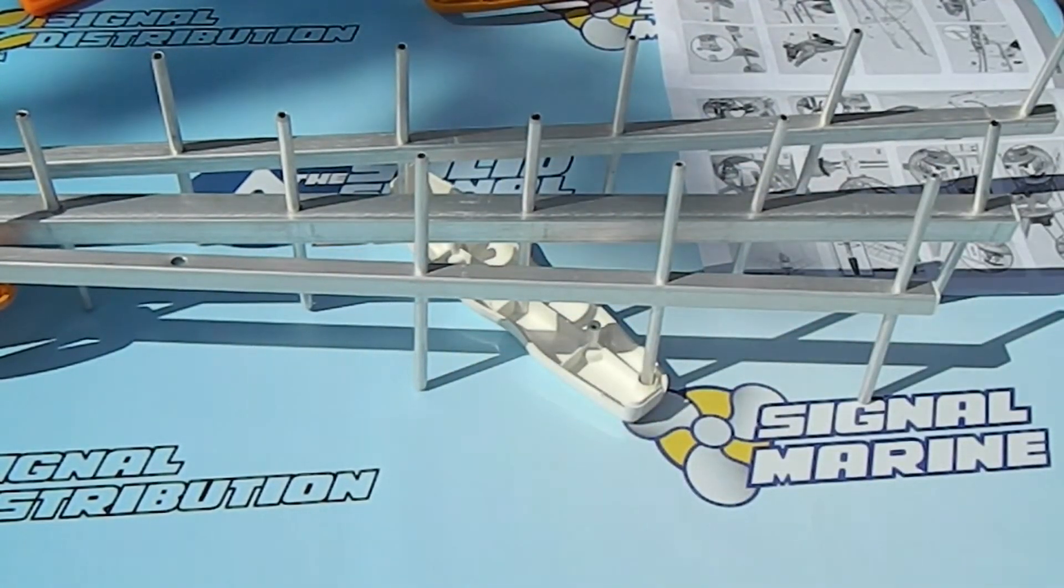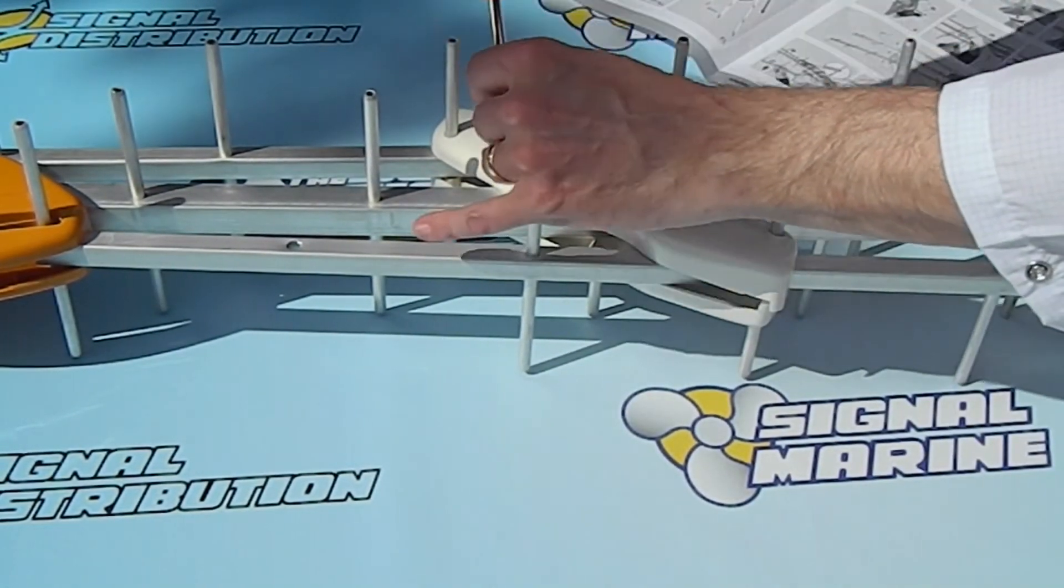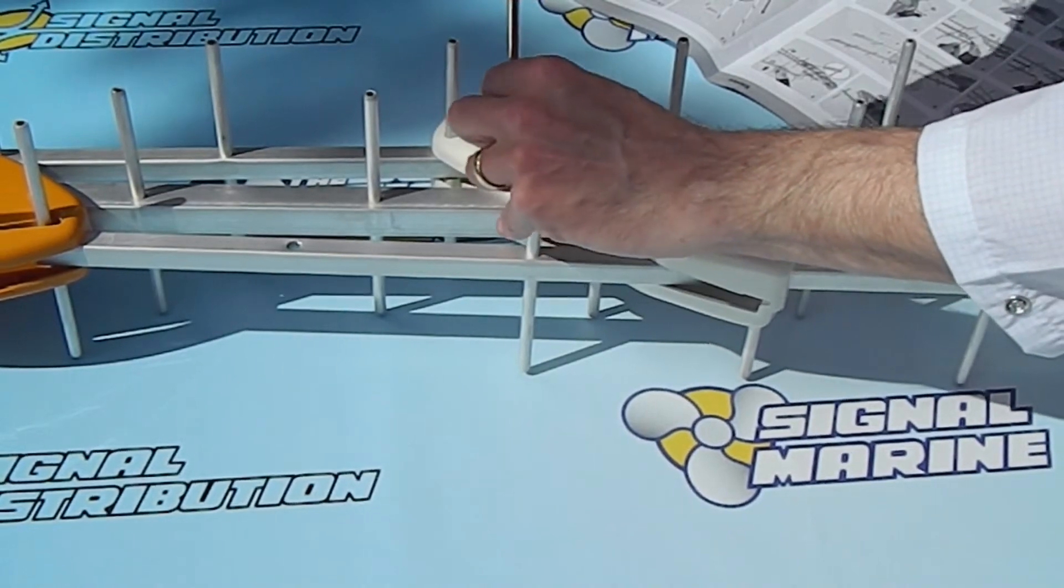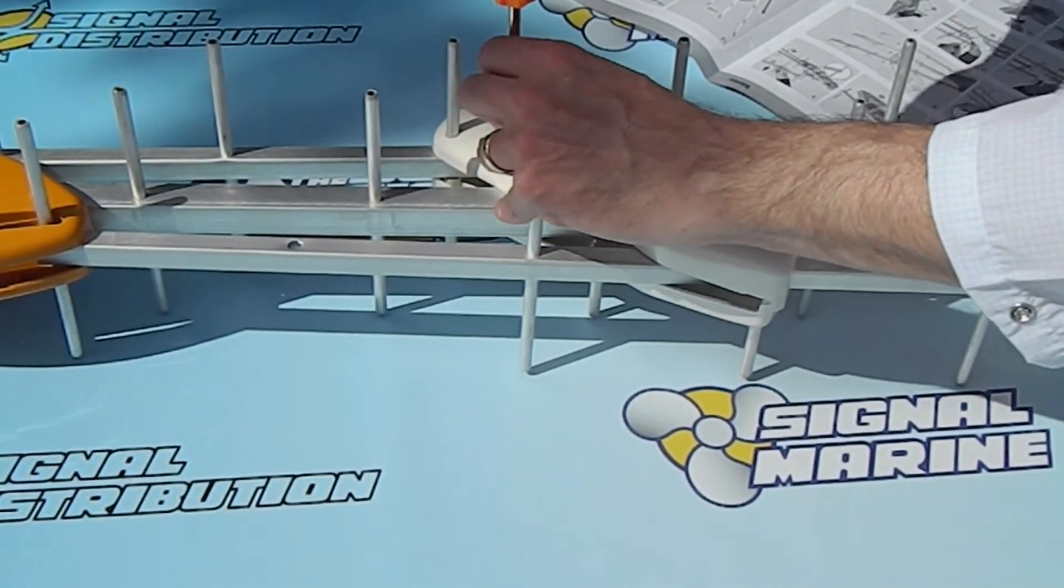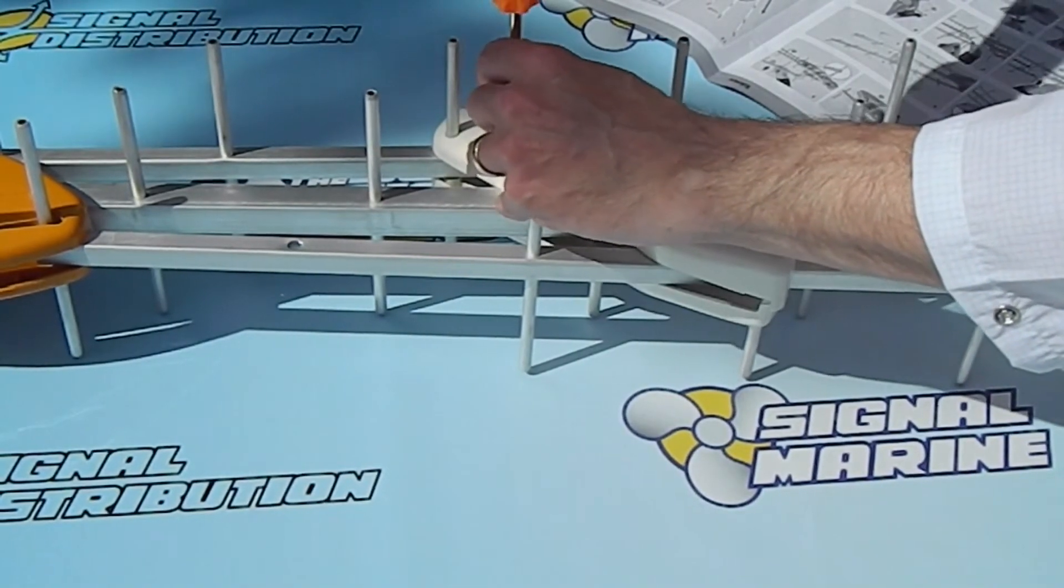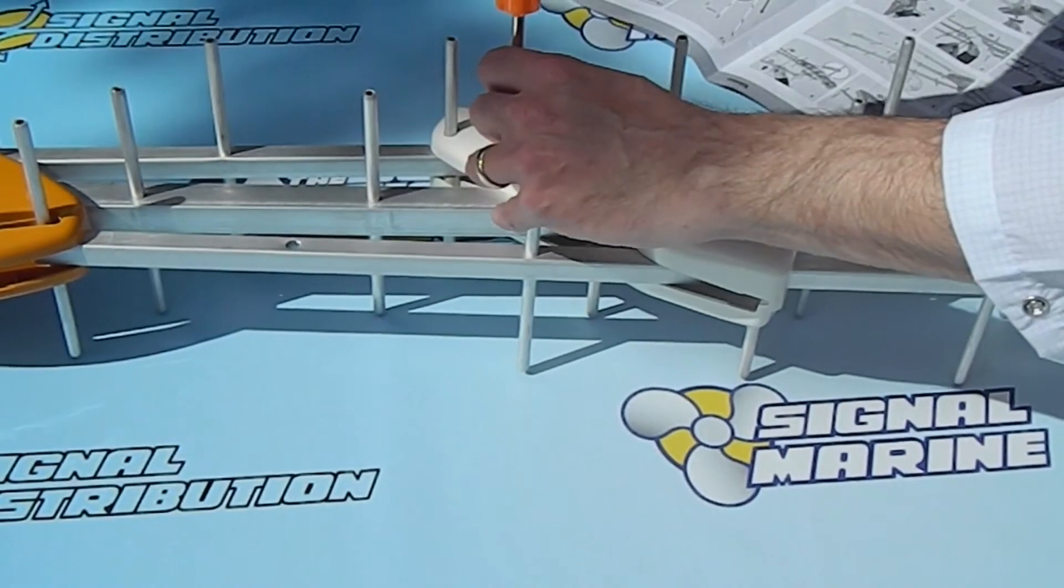Then make sure that when you lay the top piece on that it's facing the same direction as the bottom piece. It's totally possible to put this thing on upside down and then it's not actually going to fit right. It's not going to work right and you could potentially crack the plastic. When you're sure you've got it right then screw everything together with the Phillips head screws.